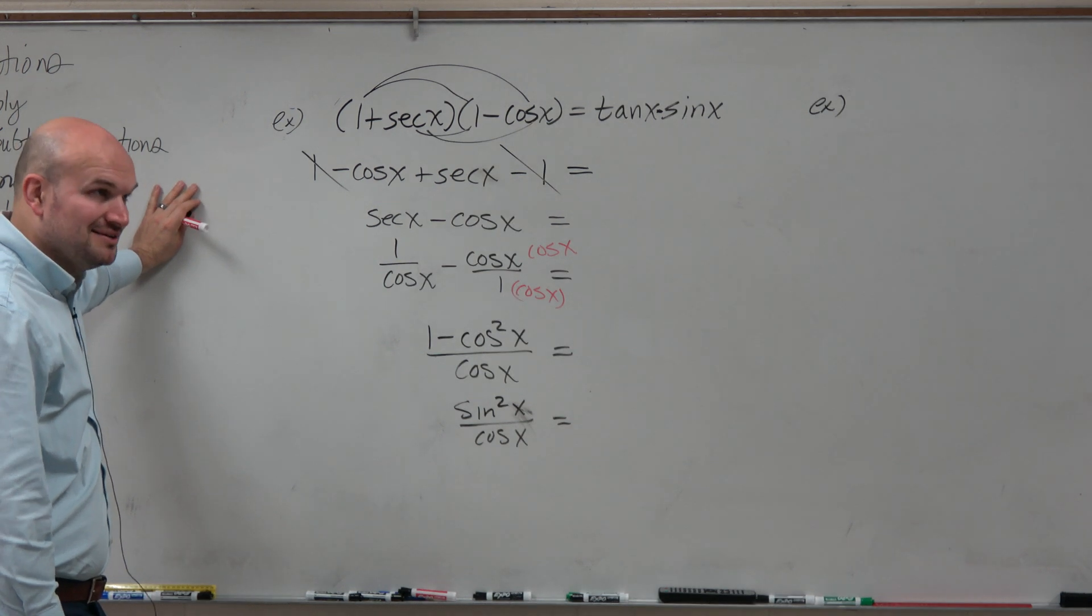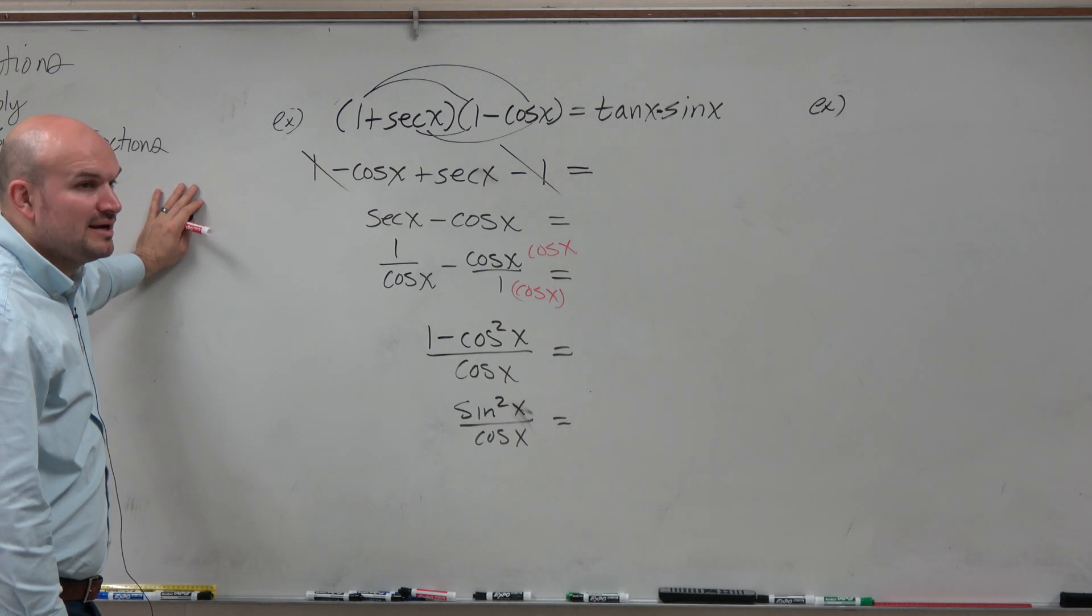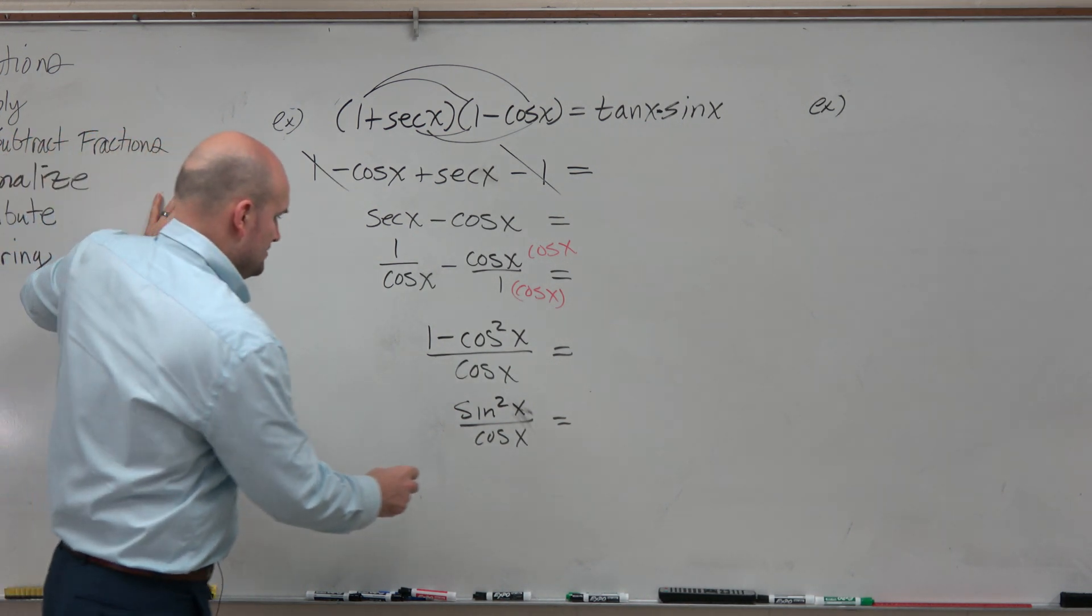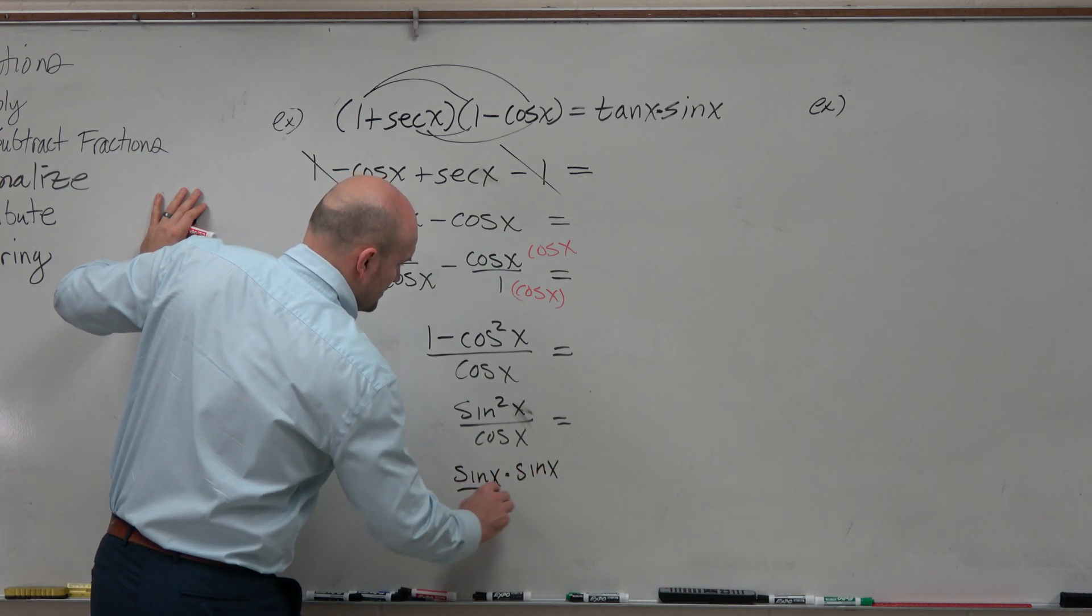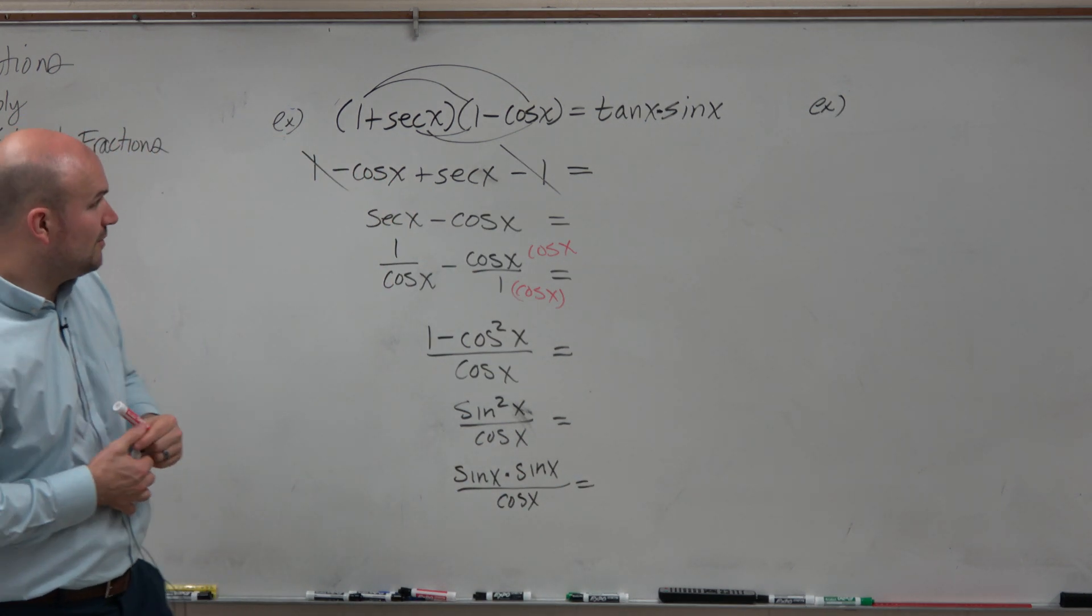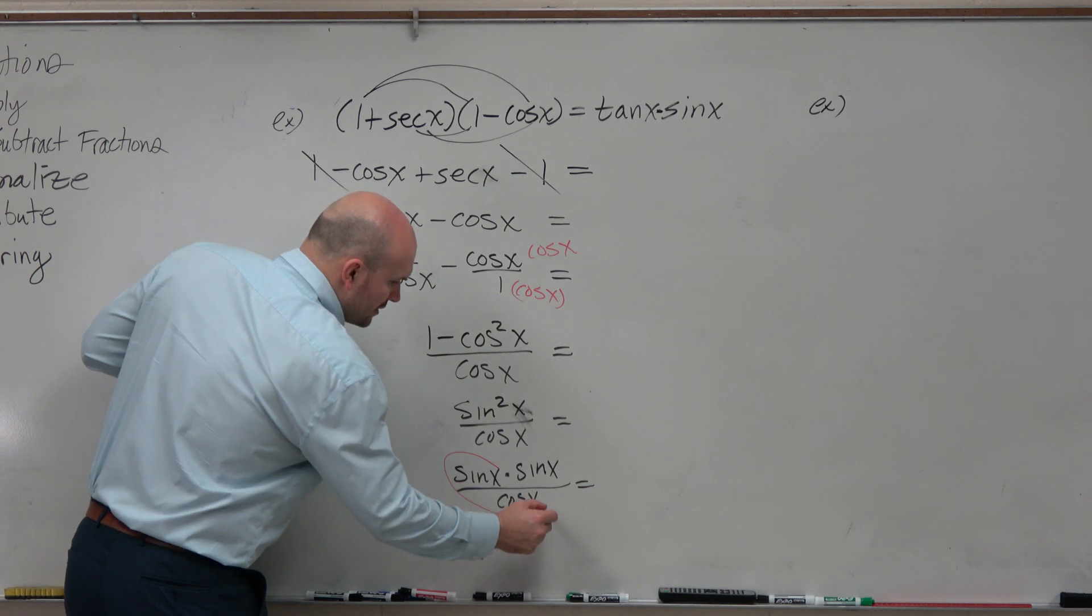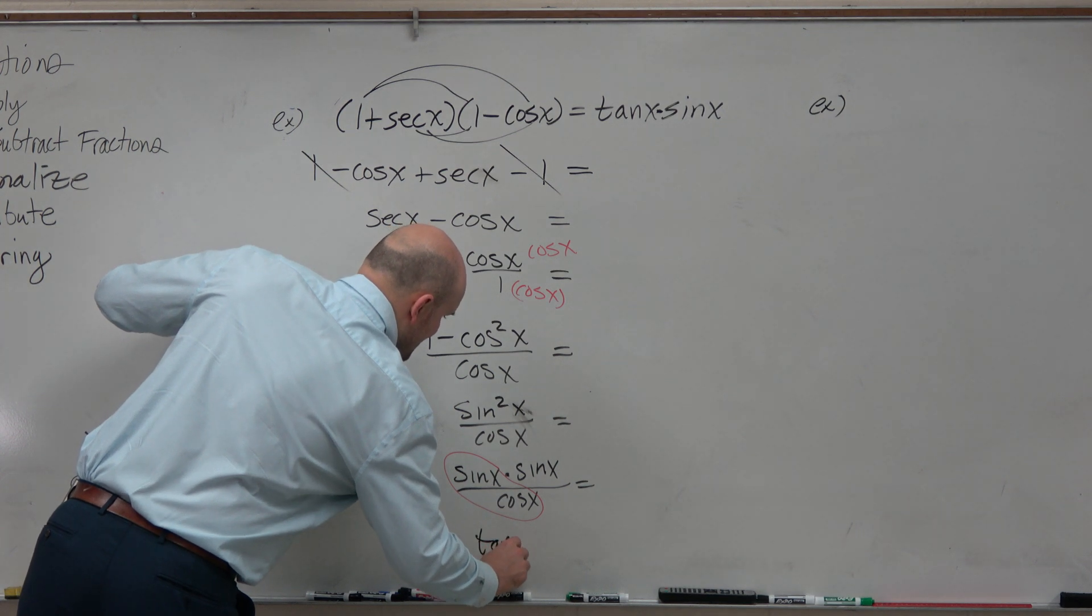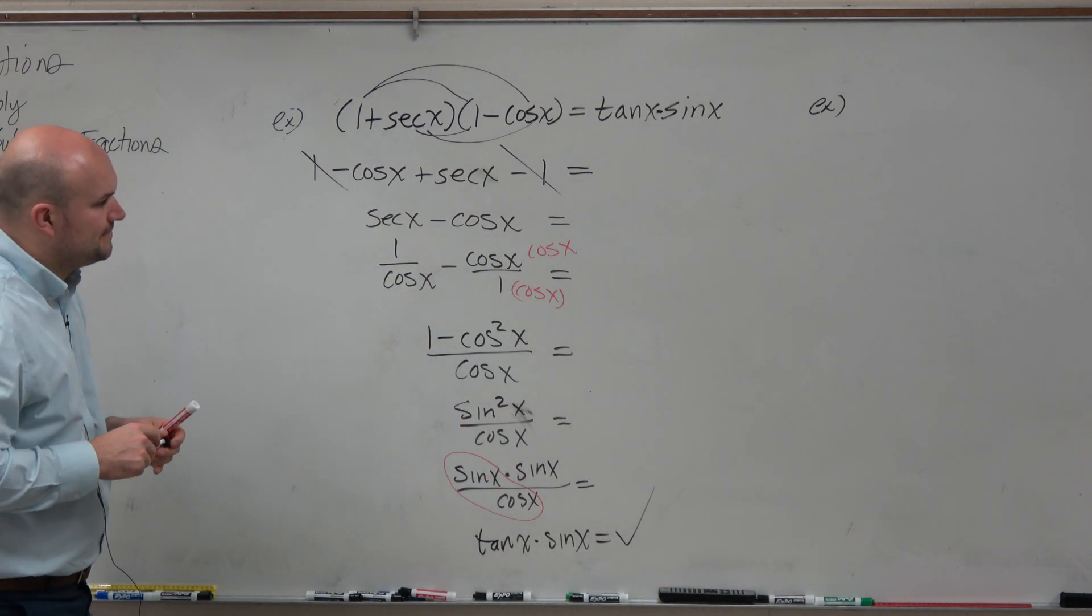But it still doesn't look the same, does it? So remember, guys, we don't have to write sine squared. Who said sine squared has to be written as sine squared? Can't you just separate it? Well, we could write sine squared as sine of x times sine of x, all over cosine of x. And then you have tangent. And remember, we want to get tangent, which is sine over cosine. So I can just group the cosine with that sine. So now I have tangent of x times sine of x equals the right-hand side.